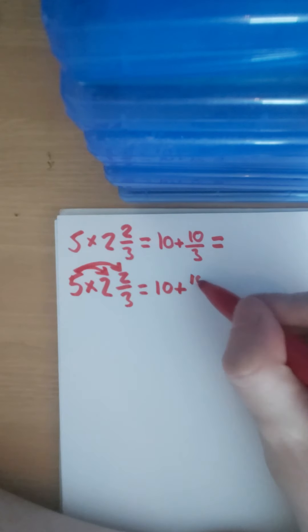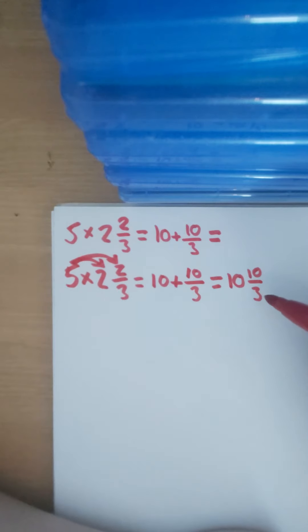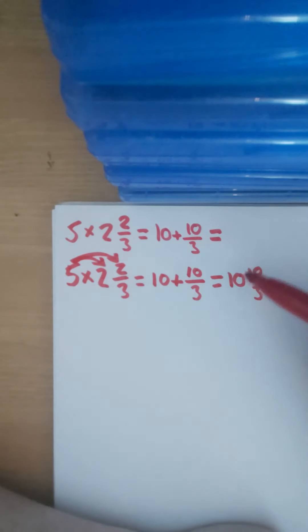Then we are going to multiply the numerator of the fraction, the top number. So 5 multiplied by 2 again is 10/3. So if life was really simple, we would say 10 and 10/3, but we can't do this. Do you notice why? Because here the numerator is much bigger than the denominator.